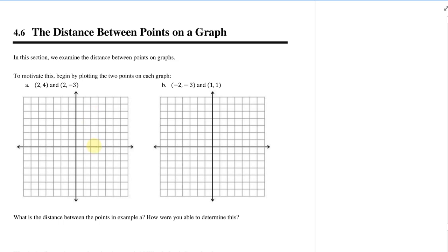So here's the point (2, 4) — 1, 2, 3, 4 — there's one point. And then the other one is (2, -3), so 1, 2, 3. I'm going to just connect these points here. So between these two sets of points, can we determine the distance? For graph A, I can figure out the distance between these two points — yes, I totally can. I can just count: going up 1, 2, 3, 4, 5, 6, 7 points. So the distance between those two points is 7 units.